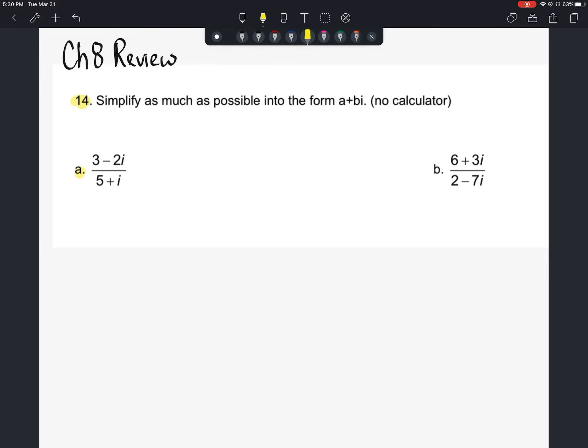We've got a fraction 3 minus 2i over 5 plus i. So if we're trying to simplify this, we have a complex number divided by a complex number. One of our main goals right here is to rationalize the denominator. We cannot leave any imaginary numbers or irrational numbers in our denominator.